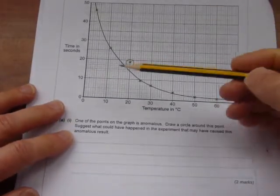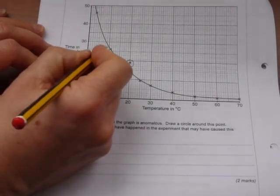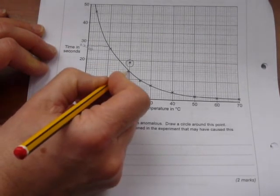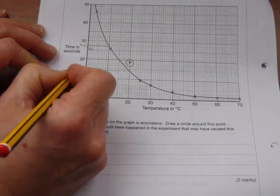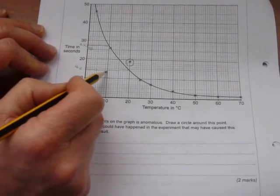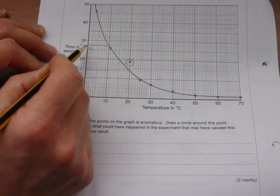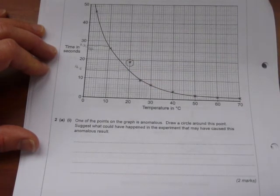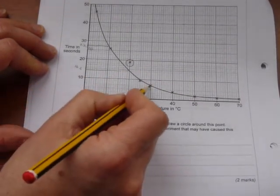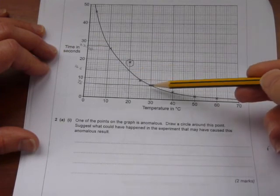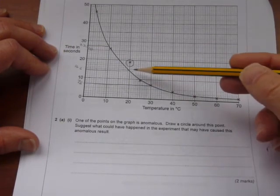We look at the graph again and we see at ten degrees, the time taken is about twenty-seven to twenty-eight seconds. At twenty degrees, the time taken is about fourteen seconds. Now, twenty-eight is double fourteen. Or put it another way, fourteen is half twenty-eight. So going from ten to twenty degrees C, the time taken is halved, that means the rate has doubled. Going from twenty to thirty degrees C, we said at twenty it takes about fourteen seconds. At thirty degrees C, it takes about seven seconds. So you've increased temperature by ten degrees and the time has halved, so the rate has doubled.